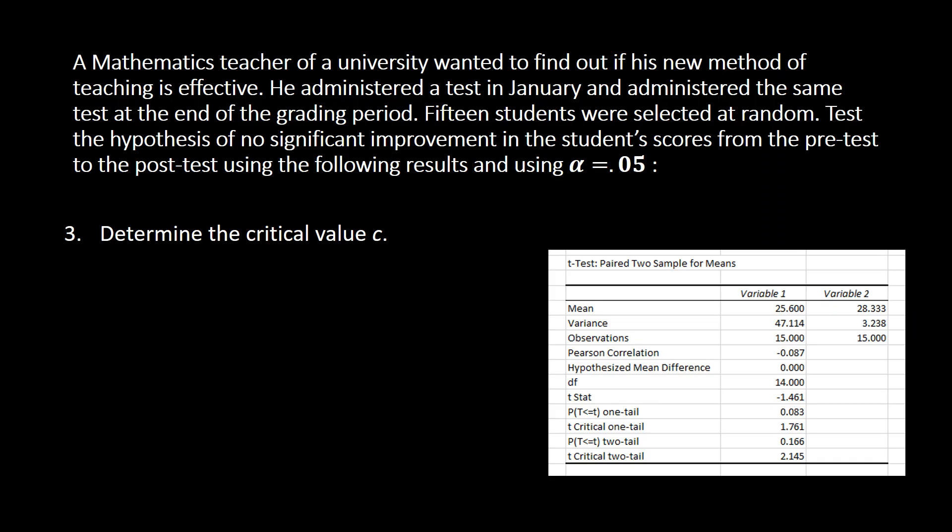We are now ready to complete our missing information for this step number three. A while ago we had two-tailed test, level of significance, but we don't have the df. Df here is shown on the table. You don't need to compute that one. Df is equivalent to 14. We also have the critical value. The critical value there is, based on the table, we have the two-tailed critical value which is 2.145. And this one here should be a positive-negative value because that's two-tailed.